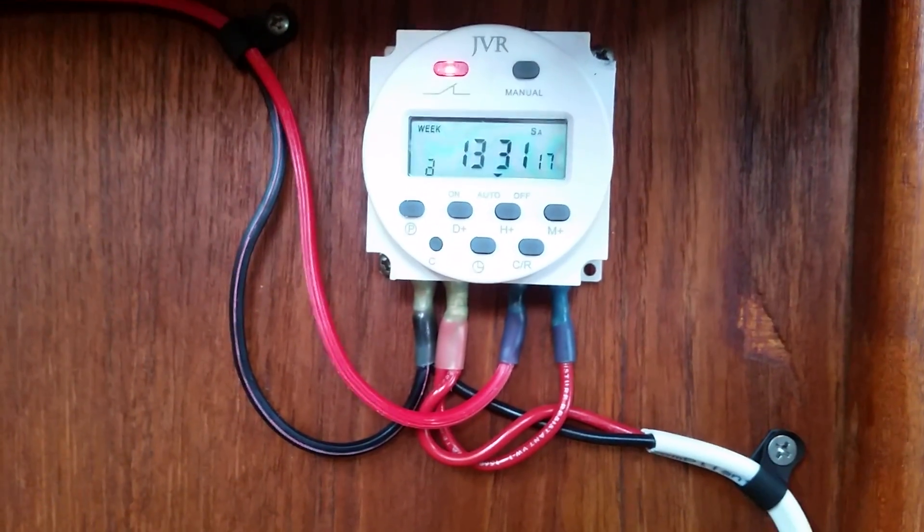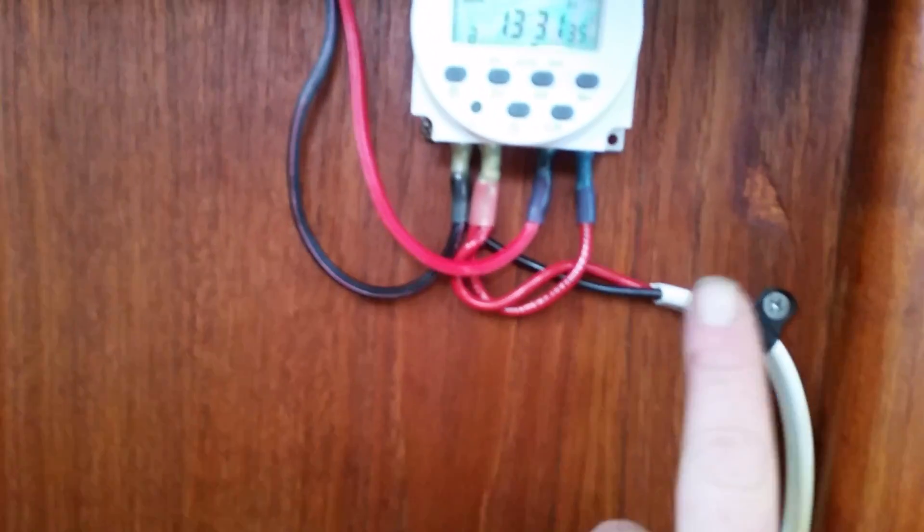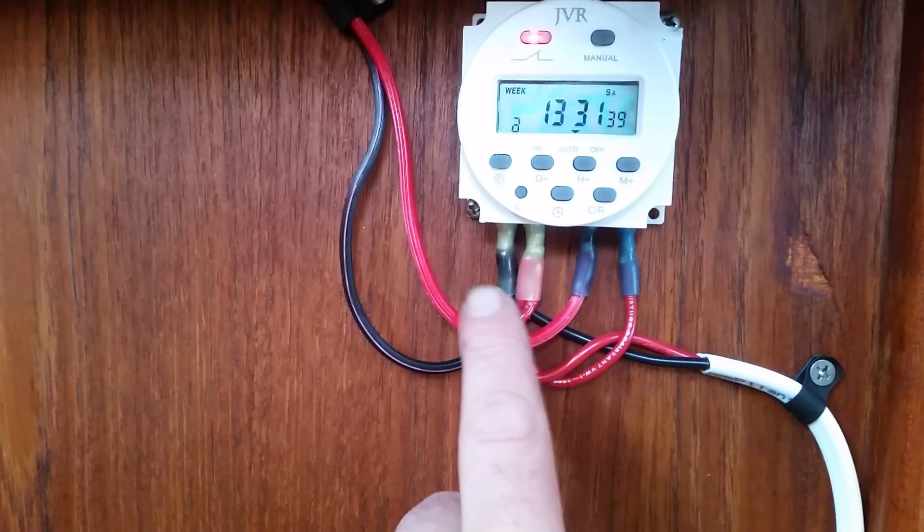Here's the 12-volt timer that I have set up for my chest freezer in my boat. This is how you wire it up. The source from the battery - the negative comes over here.